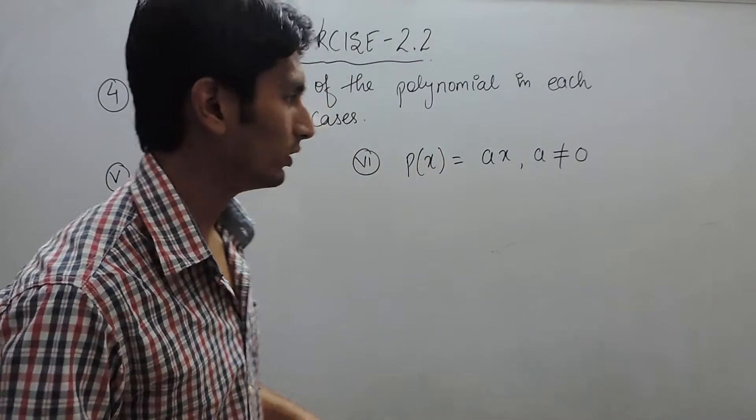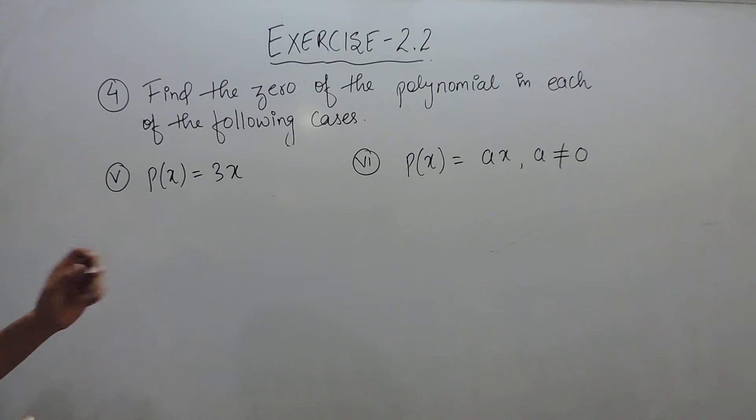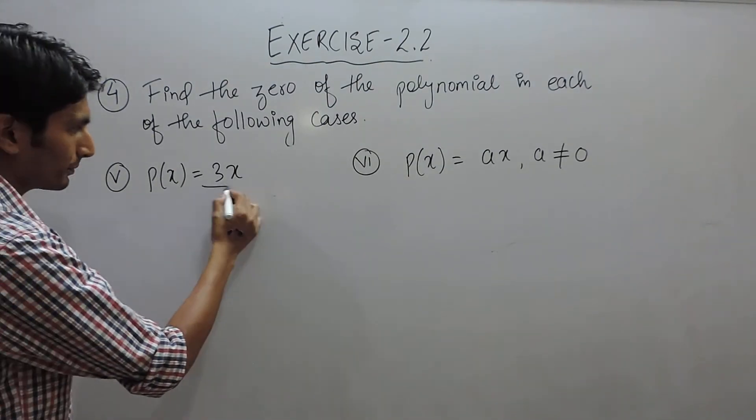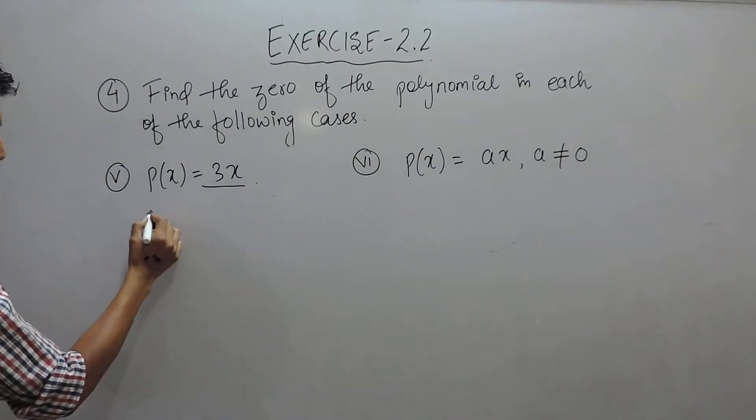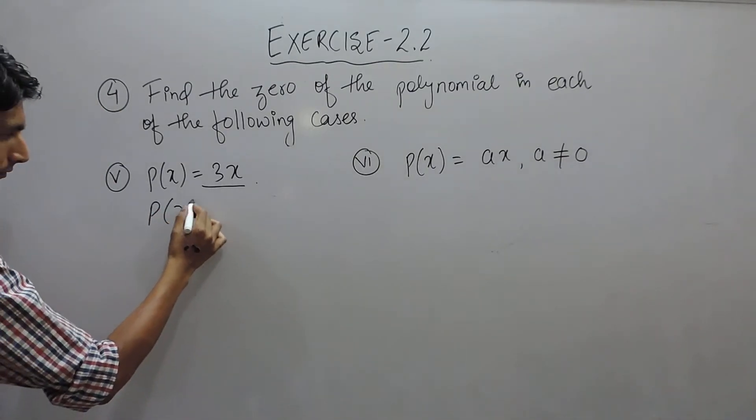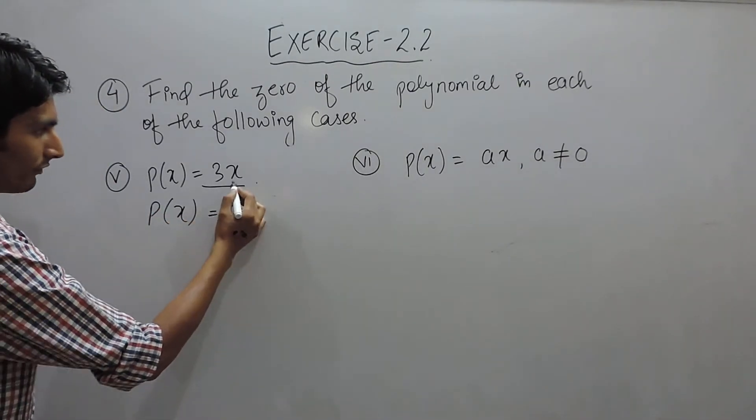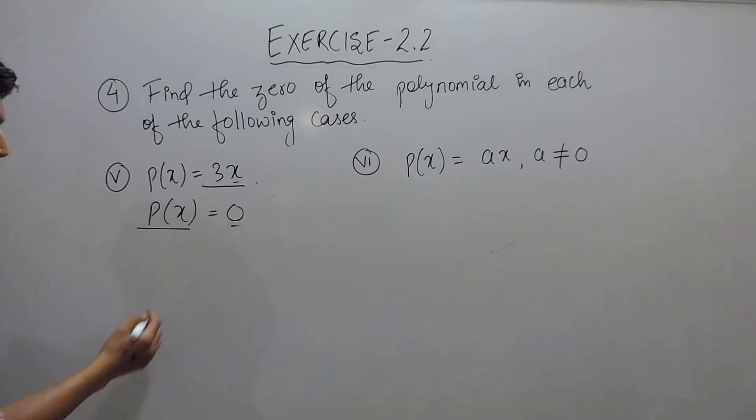Hello everyone, in this video we are solving part 5 and part 6 of question 4. You have to find the zero for this particular polynomial, which means find the value of x for which this polynomial becomes 0.